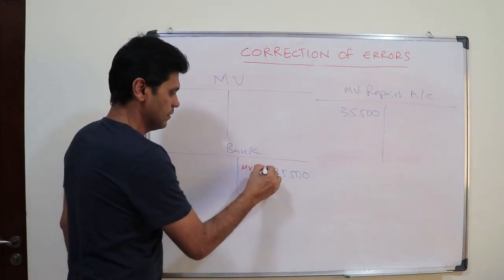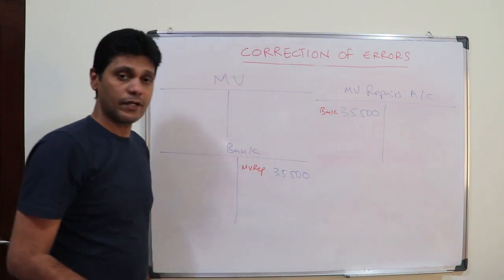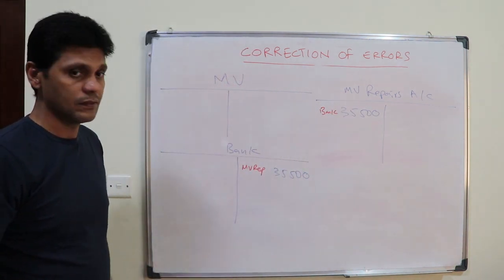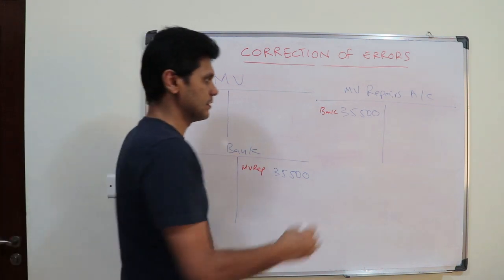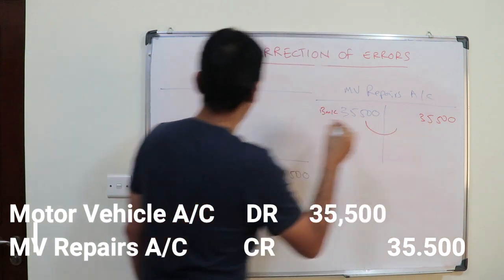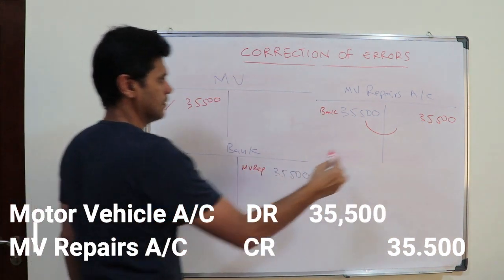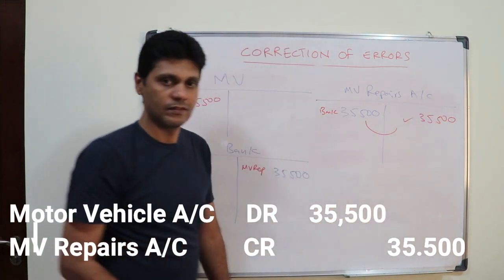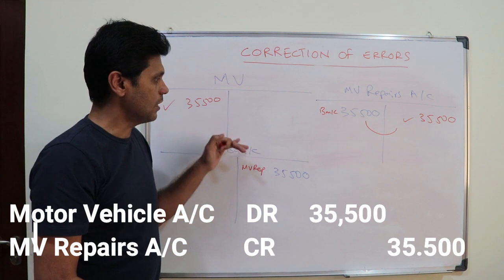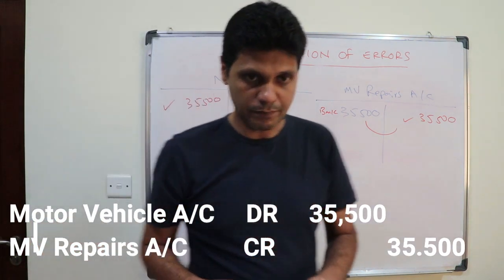So how do you rectify this? This is the motor vehicle repair account and this is the bank account. To rectify: you credit the repairs account and you debit the motor vehicle account. That is how you rectify this. These kinds of errors are known as errors of principle.